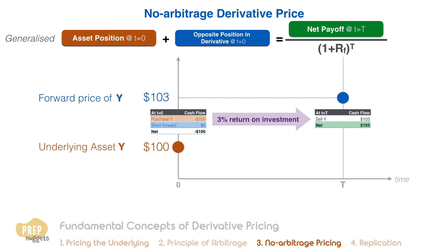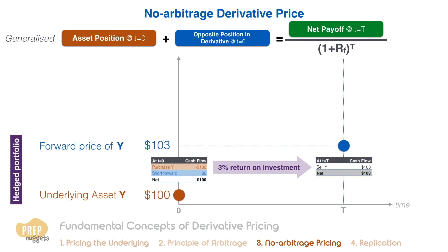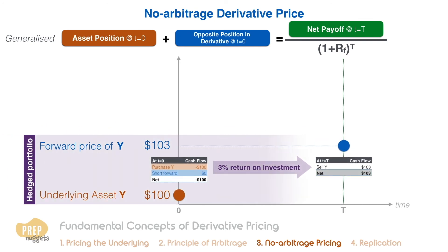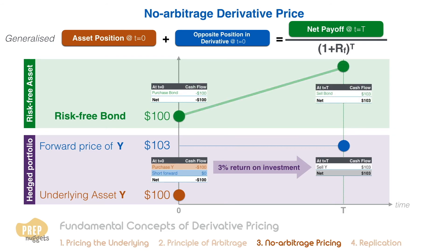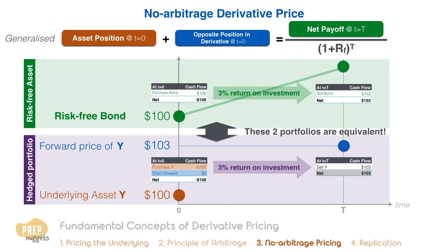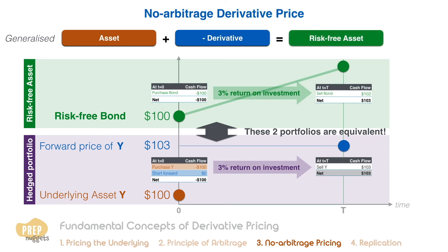Going back to our example, do you realize that the cash flows and risk characteristics of this portfolio are exactly the same as a risk-free bond? In both instances, the investor places $100 at time zero and gets a return of the 3% risk-free rate after one year. In other words, an asset and a derivative on the asset can be combined to produce a position equivalent to a risk-free asset.